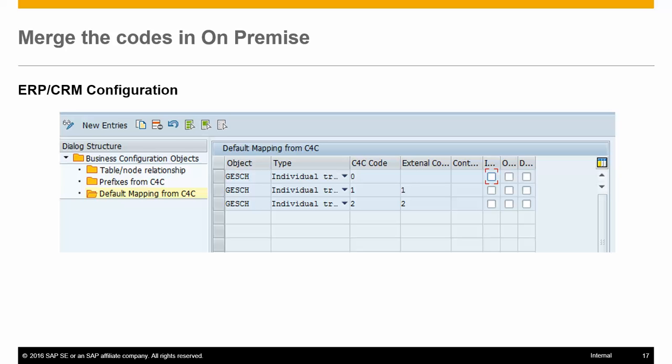In such a case, the logic uses 'Default Plus Merge' — meaning for codes where a default mapping is present, the default mapping takes preference. For codes where a default mapping is not found, a merge is done and new codes will be created in C4C if needed.